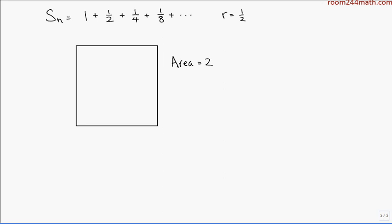So the first partial sum means the sum of the first 1 term. In other words, just the first term, which is 1. So that's going to be half of this square. So we can just cut the square in half. There's half your square.